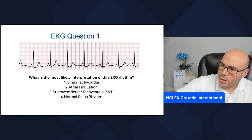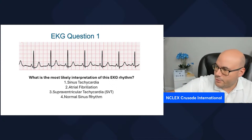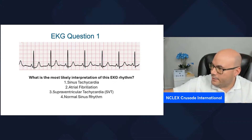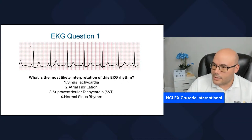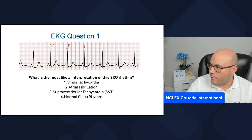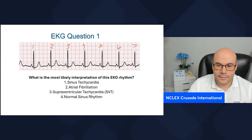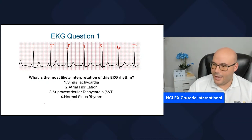Counting the big squares: 1, 2, 3, 4, 5, 6, 7, 8, 9, 10, 11, 12, 13, 14, 15, 16, 17, 18, 19, 20, 21, 22, 23, 24, 25, 26, 27, 29, 30 — 30 big squares. We have a six-second strip. Now counting the QRS complexes: one, two, three, four, five, six, seven — times 10 equals 70. So we have a regular rhythm and the heart rate is approximately 70 beats per minute.